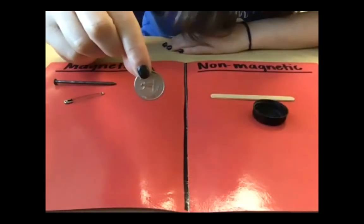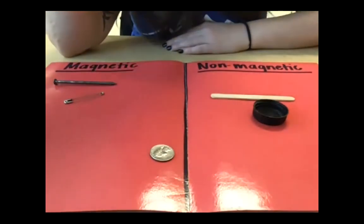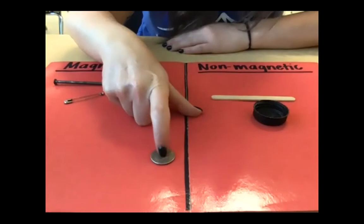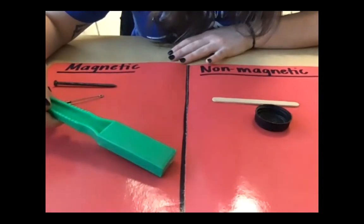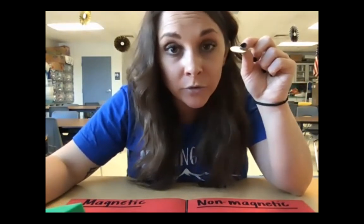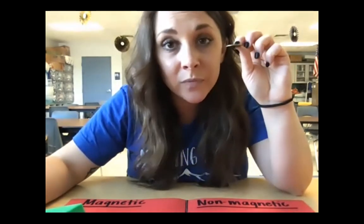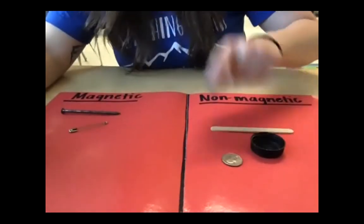Here I have a quarter. I'm going to make a guess first — I think it is magnetic because it's made out of metal, so I think it will stick to my magnet. Are you ready to find out? My quarter does not stick to my magnet — it's not magnetic! Coins — all coins, pennies, nickels, dimes, and quarters — are very special because they are made out of metal, but not a type of metal that is magnetic. So that's important to remember: not all metals are magnetic. I'm going to put it on the non-magnetic side.